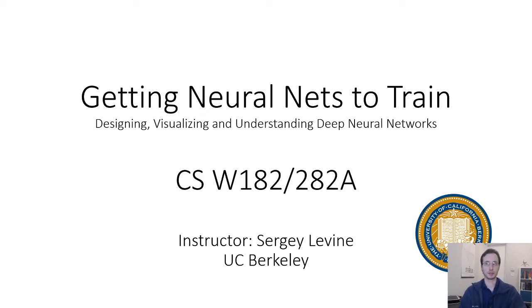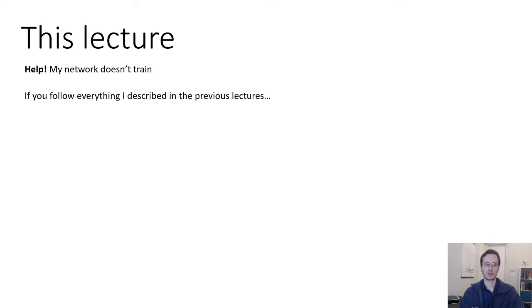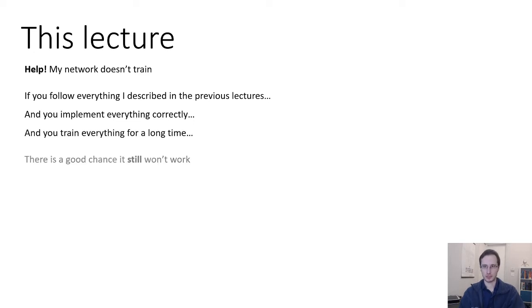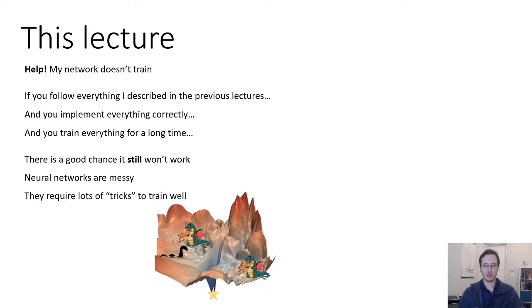Welcome to lecture 7 of CS182. Today we're going to talk about how to actually get neural nets to train well. Even if you follow all the suggestions from previous lectures, set up your neural network, and try to train it, things aren't quite working — even if you implemented everything correctly and trained for a really long time — that's not unusual. Neural network optimization landscapes are problematic; they're full of monsters and dragons, and neural networks require lots of tricks to train well. Knowing those tricks is just as important as understanding all of the theoretical nuances.